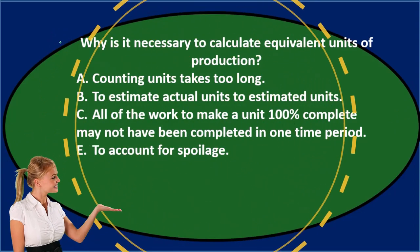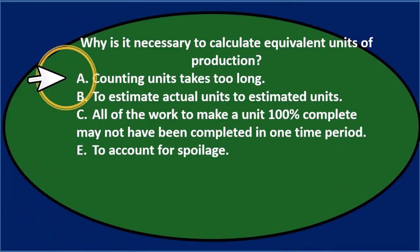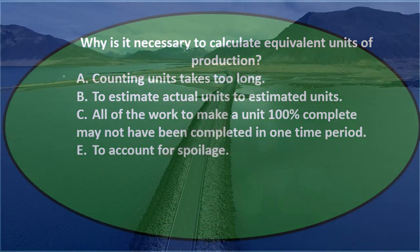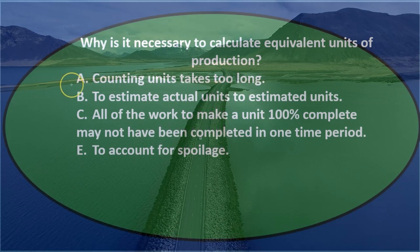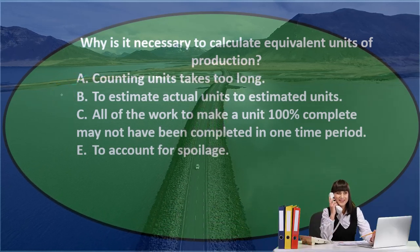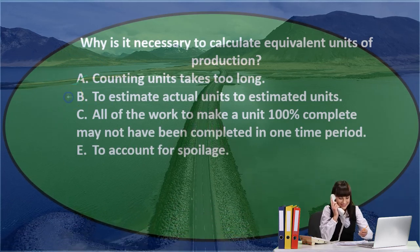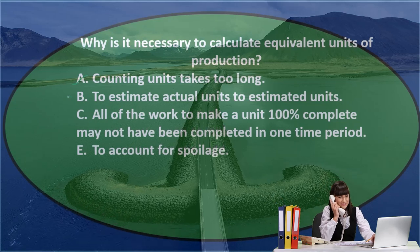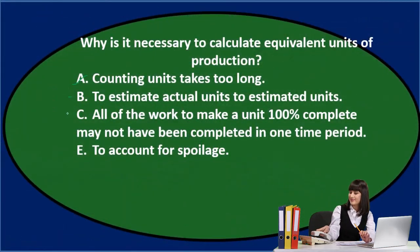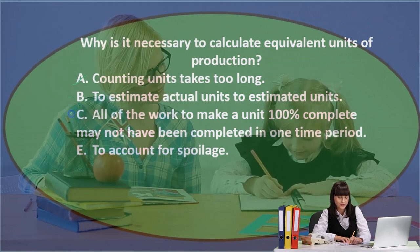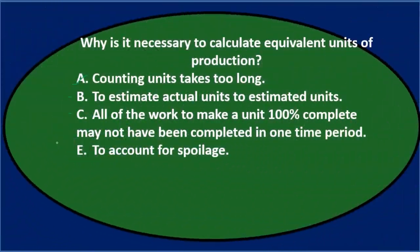Using the process of elimination: A) counting units takes too long — that doesn't sound right; we'd probably still want to count units anyway. B) to estimate actual units to estimated units — possibly, if we're making some type of estimate. C) all of the work to make a unit 100% complete may not have been completed in one time period — that seems true, I'll keep that. E) to account for spoilage — I'll keep that for now.